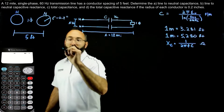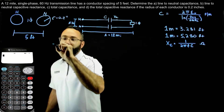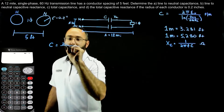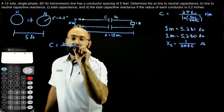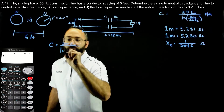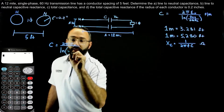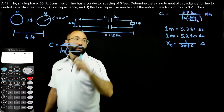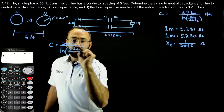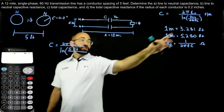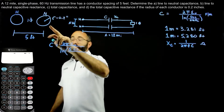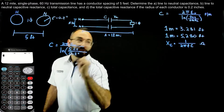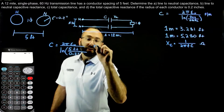Let's solve for the line-to-neutral capacitance of the single phase transmission line. C equals 2π times epsilon naught, divided by the natural log of DEQ over GMR sub C. DEQ is just the conductor spacing of 5 feet, and GMR sub C is the radius. We only have one conductor so we're not dealing with bundles — we'll use the radius value of 0.2 inches. This will be in the units of farads per meter.